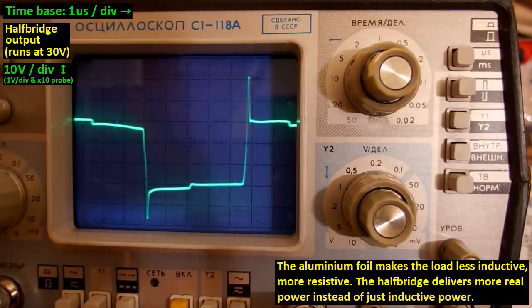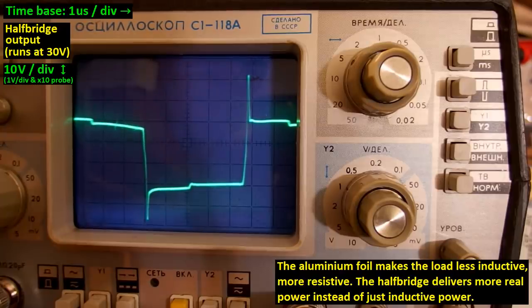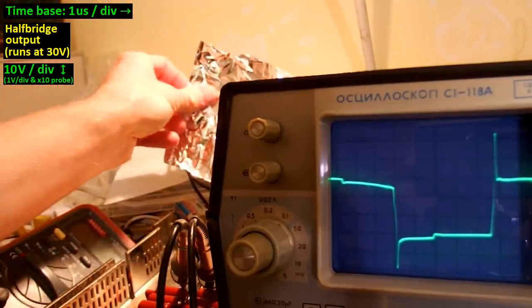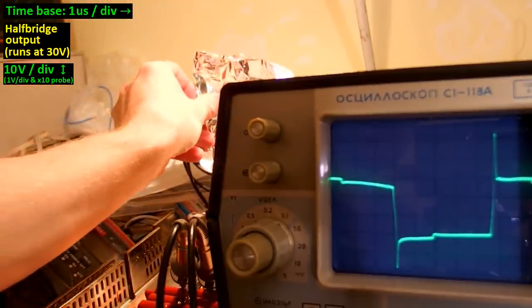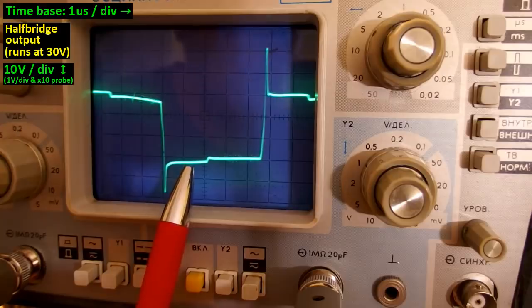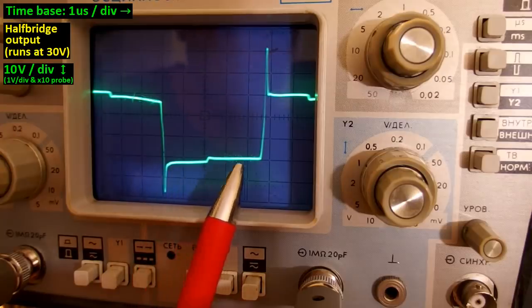When I put the aluminum foil to it, it moves to the left. When it's more resistive, the diodes pass the current shorter and the transistors longer.